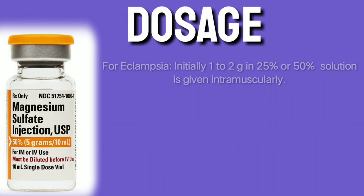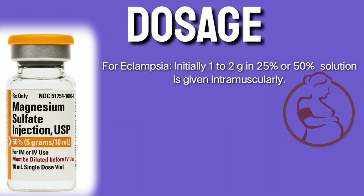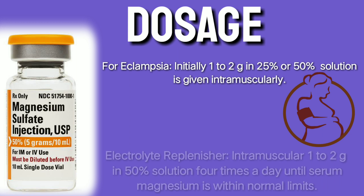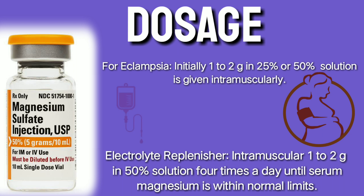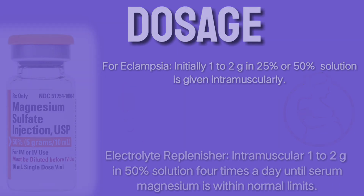Dosage for eclampsia: initially 1 to 2 g in 25% or 50% solution given intramuscularly. For electrolyte replenishment: 1 to 2 g in 50% solution IM four times a day until normal levels are achieved.